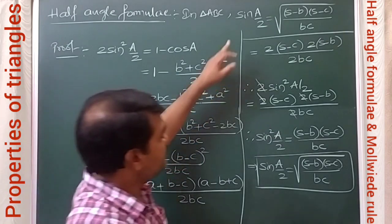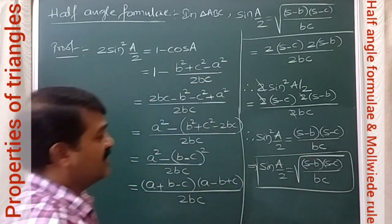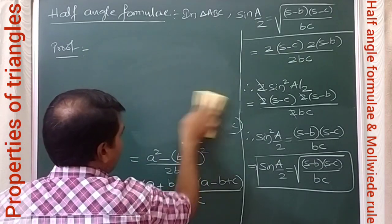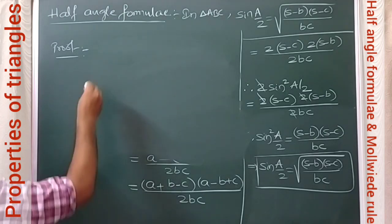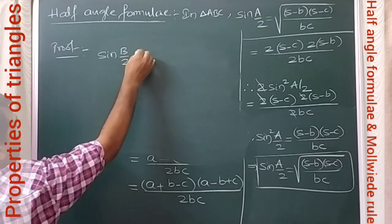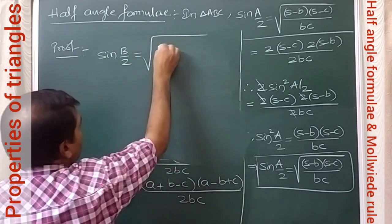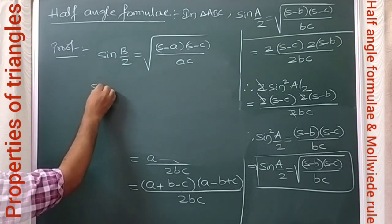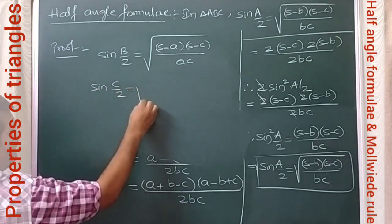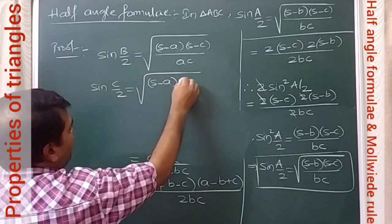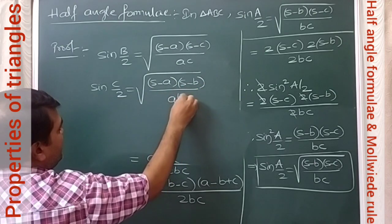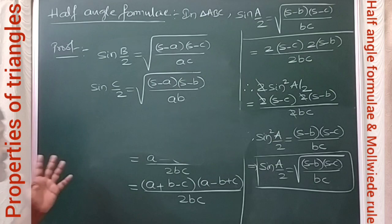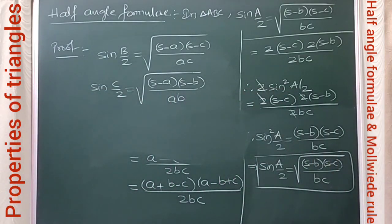Similarly we can derive two more formulas: sin(B/2) = √[(s − a)(s − c) / ac], and sin(C/2) = √[(s − a)(s − b) / ab]. These are the formulas for sin(A/2), sin(B/2), and sin(C/2). Now let us derive the formulas for cos(A/2), cos(B/2), and cos(C/2).